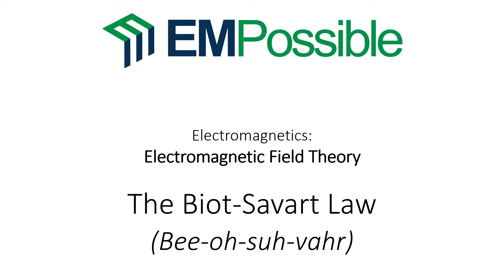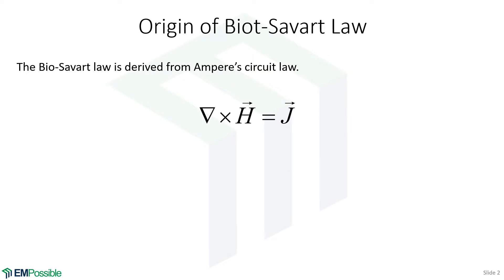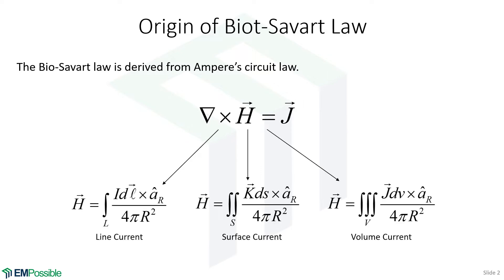The Biot-Savart Law. I'm not going to perform a rigorous derivation here, but it is essentially Ampere's circuit law just turned around. Ampere's circuit law says that there's a magnetic field intensity circulating around an electric current density. We can think of that equation as: if we know H, how do we calculate J? Well, what if it's the other way around — if we know J, the electric current density, and we want to calculate the magnetic field intensity? That's the Biot-Savart Law.